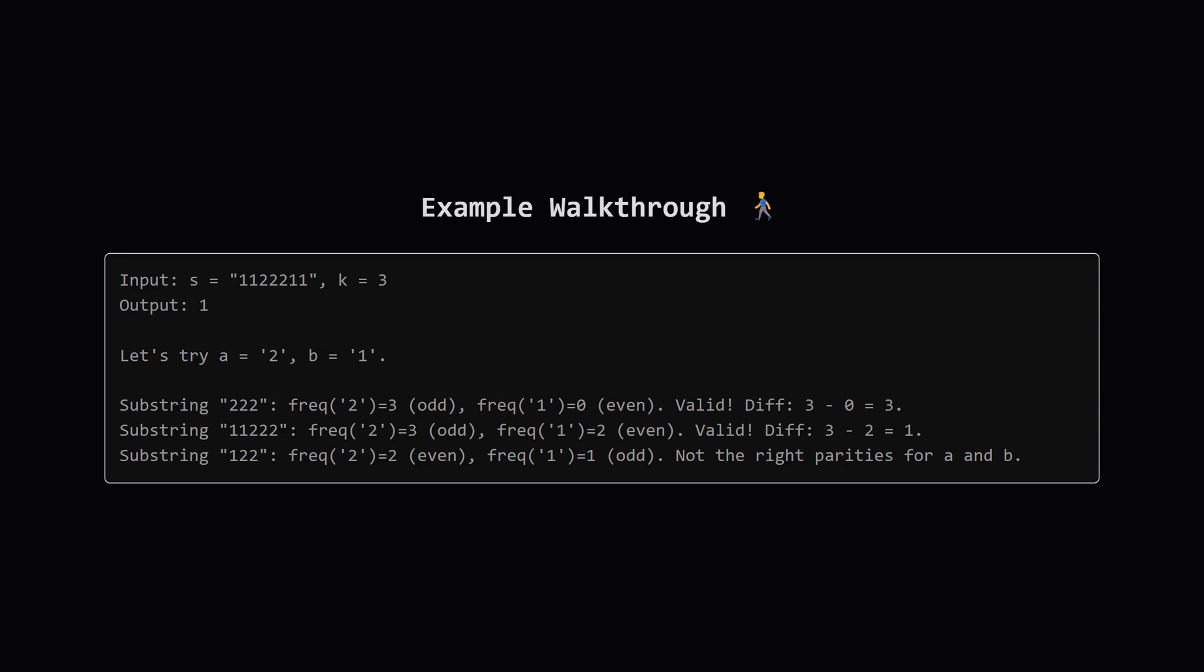Let's walk through an example to make this concrete. Say our string is 1122000, and K is 3. Our substring needs to be at least 3 characters long. Let's pick our A to be the character 2 and our B to be 1. We're looking for substrings where 2 appears an odd number of times and 1 appears an even number of times.